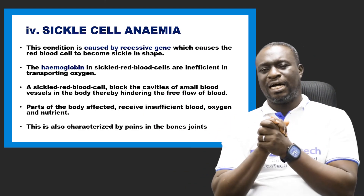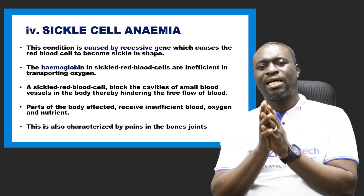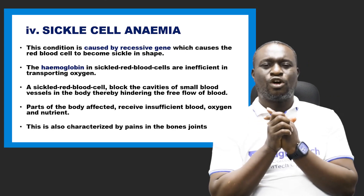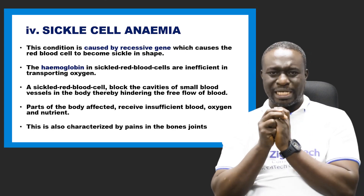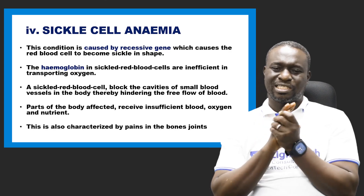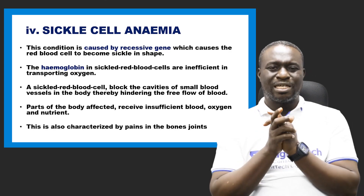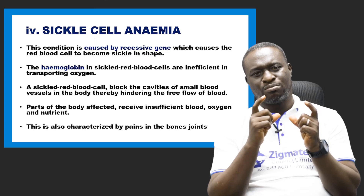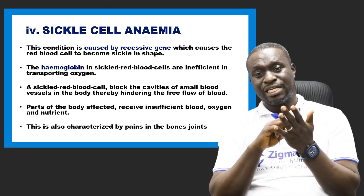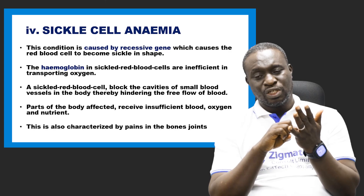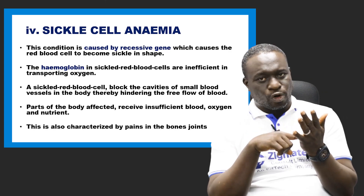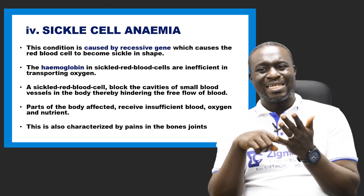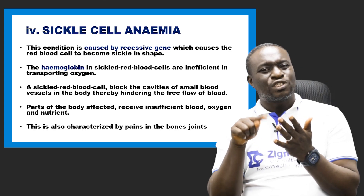Another sex-linked character is sickle cell anemia. Sickle cell anemia is a condition caused by a recessive gene which causes the red blood cells to become sickle in shape. The structure of a normal red blood cell is spherical — it is not sickle. Once it assumes a sickle shape, it causes a problem.